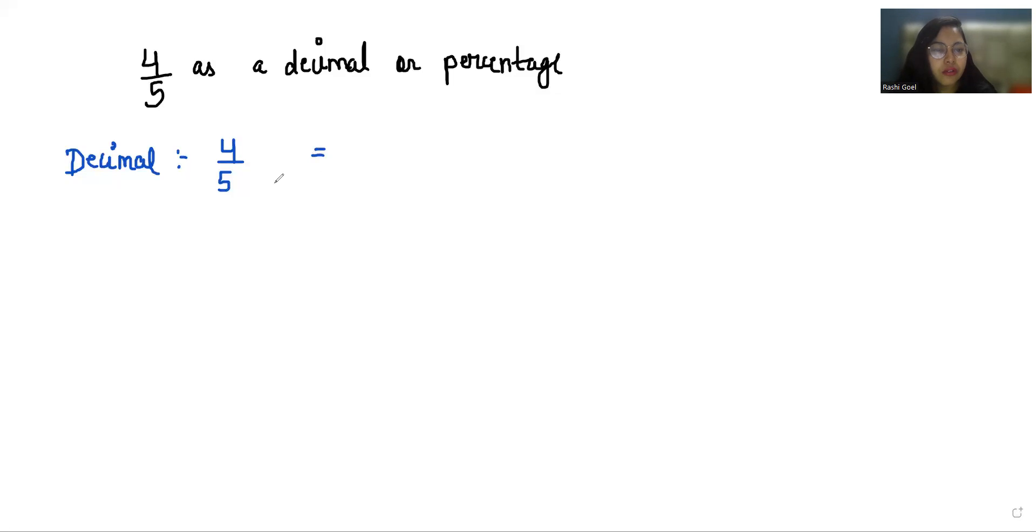We are trying to convert it to a form with zeros, that is 10, 100, or 1000. I'll take 10. To convert 5 to 10, I have to multiply by 2.